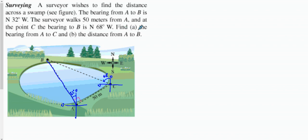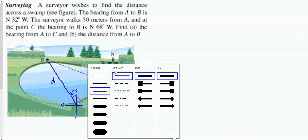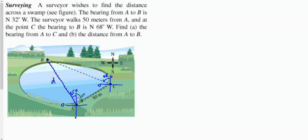What we want to do is find: A) the bearing from A to C, so we want to figure out what that bearing is; and B) the distance from A to B. I'll call this distance d — we want to figure out that angle from here to here.